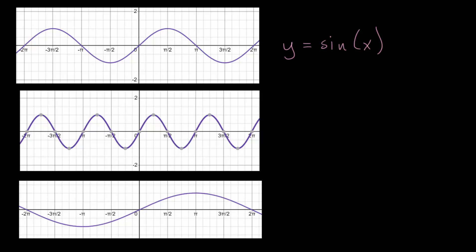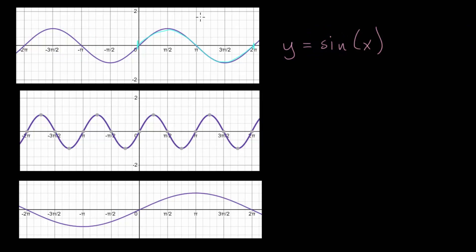In the previous video we looked at finding the period of a sinusoidal function from its equation. We considered the parent function y = sin(x), where the period is 2π. The period is essentially the horizontal distance for one unique oscillation of this function, which is then repeated infinitely as x goes to positive or negative infinity. For the parent sine or cosine function, the period is 2π.